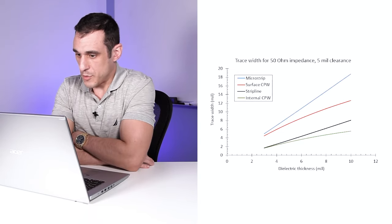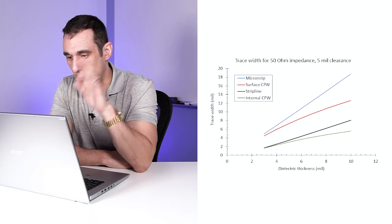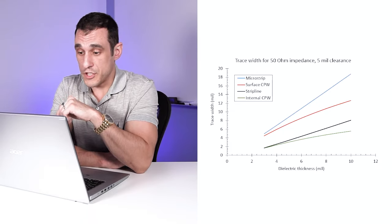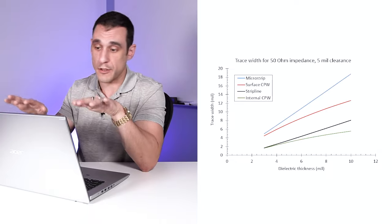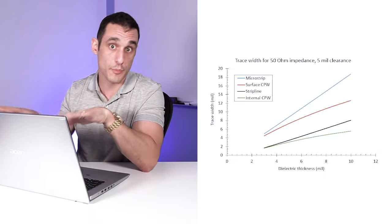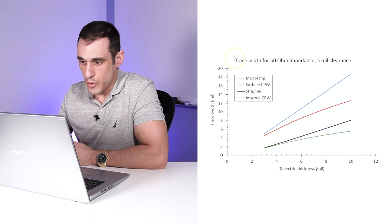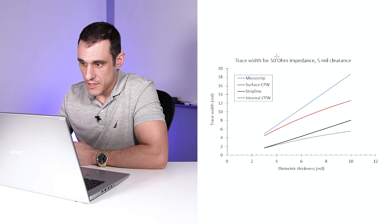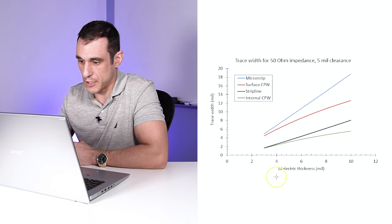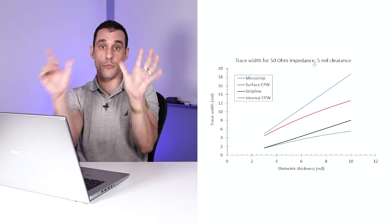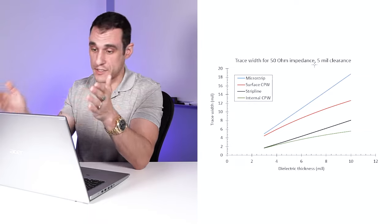Having ground pour too close to a trace can modify its impedance. To see how those two things are related, we first need to pick a particular trace geometry. In this graph I'm showing microstrips and surface coplanar waveguides, and then strip line and internal coplanar waveguide. The surface coplanar arrangement is basically a microstrip with ground pour around it, and the internal coplanar arrangement is a strip line with ground pour around it. The graph shows the trace width you would need to hit 50 ohm impedance if you had 5 mil clearance for a given dielectric thickness on the x-axis.